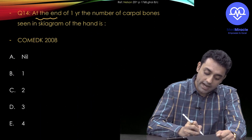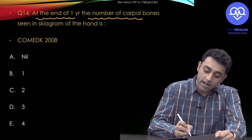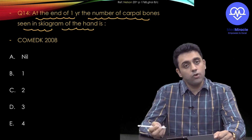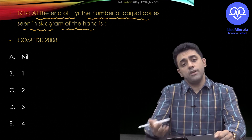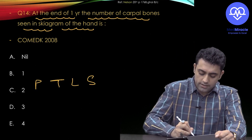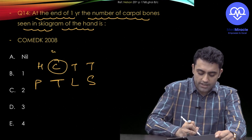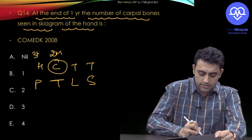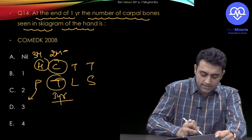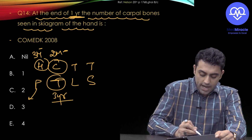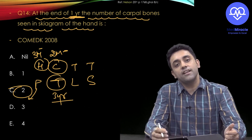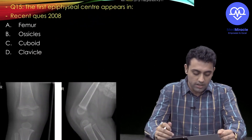Third MCQ: At the end of one year, how many carpal bones are seen on a hand X-ray? Capitate appears at two months and Hook of Hamate at three months — both are present by one year. So the answer is two carpal bones.